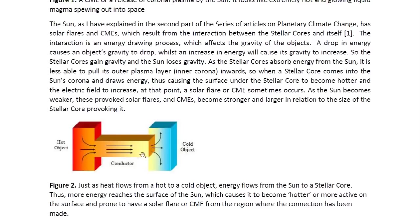What actually occurs is illustrated here. If we have a hot object and a cold object, we know that heat flows from the hot object to the cold object. In the same way, heat flows from the sun to the stellar core because the stellar core is depleted in energy and the sun still has a reservoir of energy, still able to generate energy that will flow out from its core through its layers to the surface of the sun and out through the connection that the stellar cores make with the sun by drawing matter from the sun towards themselves. But this causes heat to come from inside the sun, out through the sun's layers, and it will cause increased heat at the surface of the sun and therefore an increased electric field at that point.